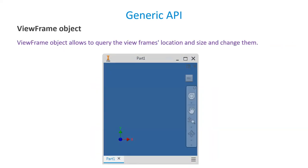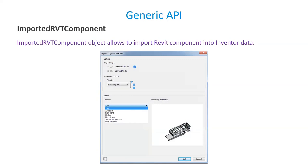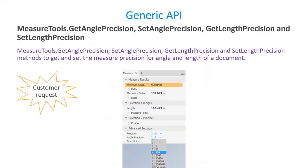A new View Frame object is introduced in Inventor 2021 which allows specifying the location and size of the view frame. The Imported RVT Component object allows importing a Revit component into Inventor data. There was a customer request to set angle precision and length precision in the measured tools — this is now implemented in Inventor 2021. Along with setting precision, angle precision and length precision can also be retrieved.